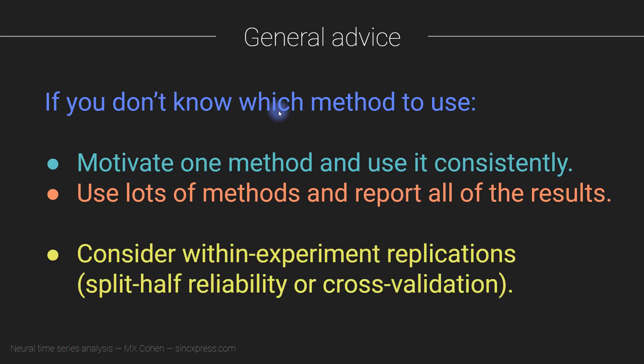If you don't know which method to use, or if you have a method but you don't know which parameters to use, or how to set up the choices that you have to make for picking time or frequency windows and thresholds and so on, then my general advice is to motivate one method, pick one method that is strongly motivated based on theory or prior data or publications. And then once you've decided on that method, continue to use it consistently throughout.